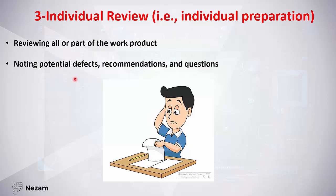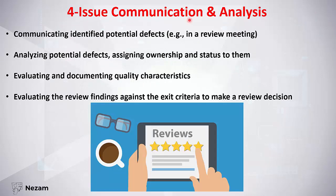Then each individual reviewer begins the individual review or individual preparation. They review all or part of the work product, note any defects they find, and raise recommendations or questions. Next, in issue communication and analysis, we communicate and identify potential defects — for example, in a review meeting. We analyze potential defects, assign ownership, determine their status, and evaluate and document all quality characteristics including non-functional characteristics.